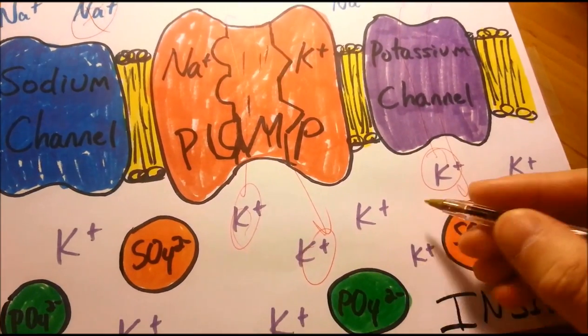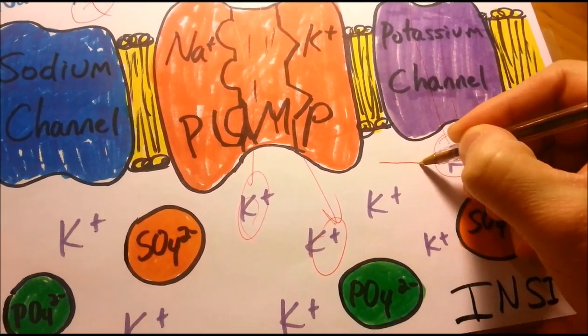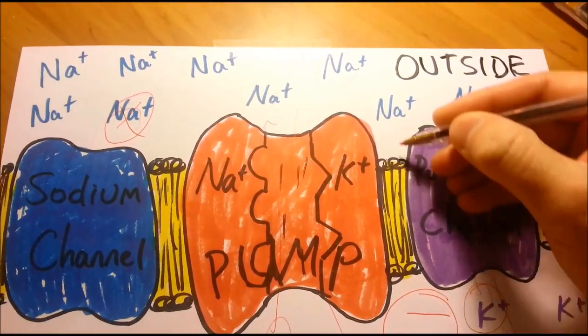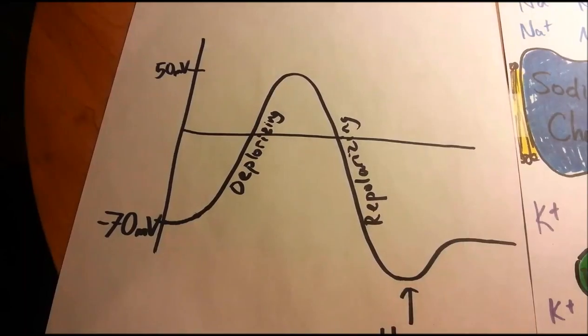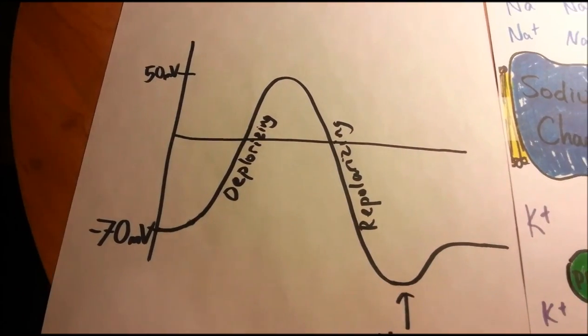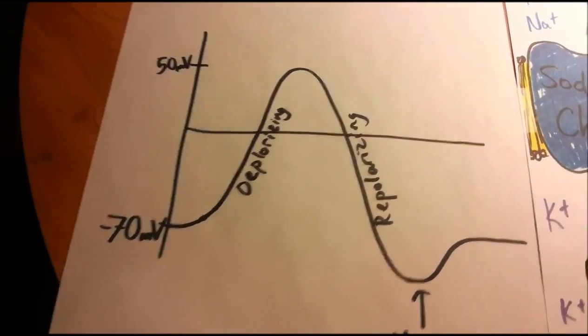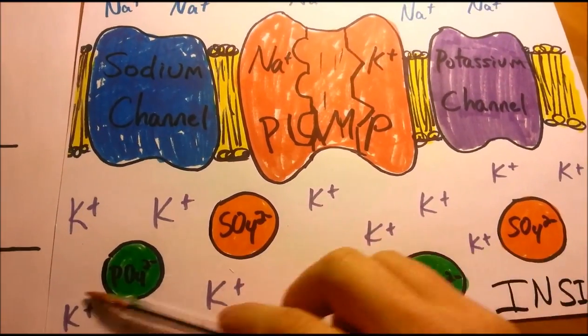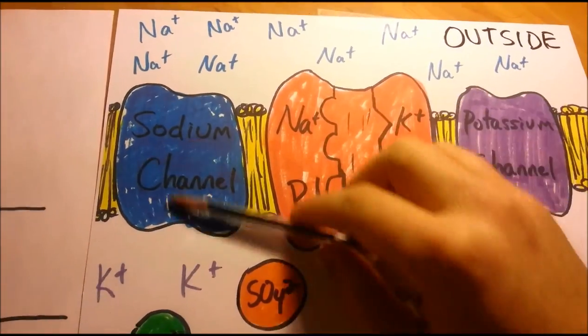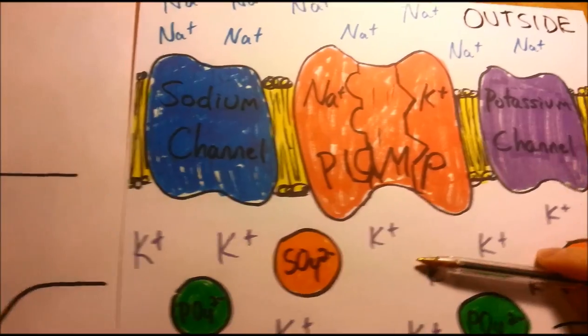And so that is going to give the overall inside of the neuron a negative charge. And the overall outside of the neuron a positive charge. Now I'm going to talk about what happens when your neurons fire. Here I have to review, outside we have a lot of sodium and inside we have a lot of potassium. This is resting. This is called the resting potential of a neuron.